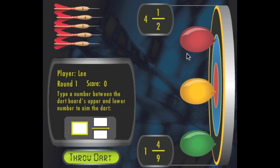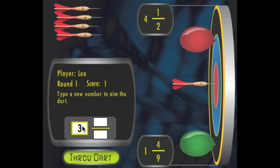The height of the dart board is mixed numbers. It goes from 1 and 4 ninths to 4 and 1 half. The player approximates the location of a balloon, types in a number, clicks through that. Nice shot. Thanks.